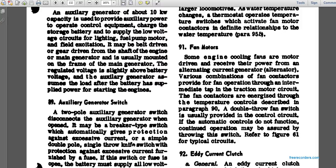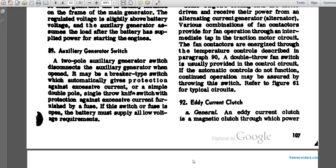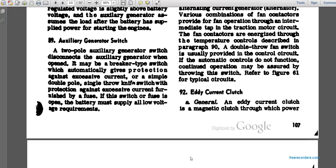Paragraph 91: fan motor. Some engine cooling fans are motor-driven and receive power from an alternating current generator or alternator. A fan contactor provides fan operation through an intermediate tap of the traction motor circuit. The fan contactor is energized through the temperature controls described in paragraph 90. A double-throw fan switch is usually provided; the circuit controls automatically, but for continued operation, the switch may be thrown manually. Refer to figure 61 for typical circuits.